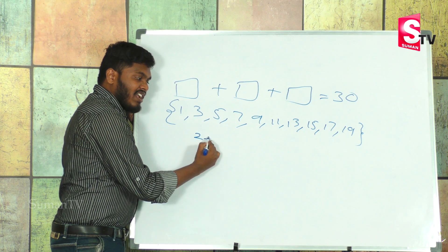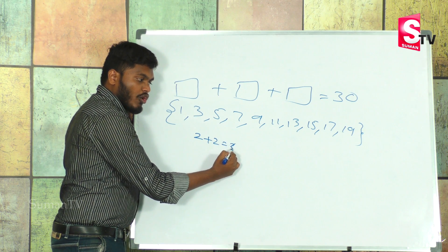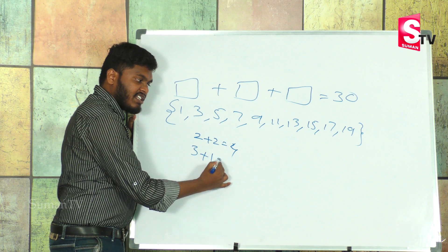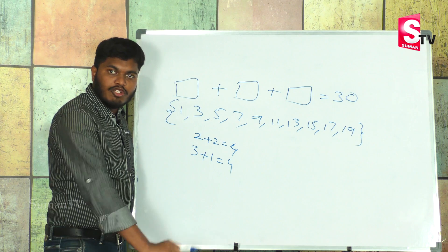If we add two even numbers, we get an even number. Two odd numbers also give an even number.